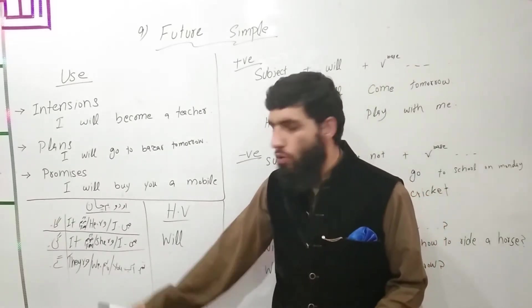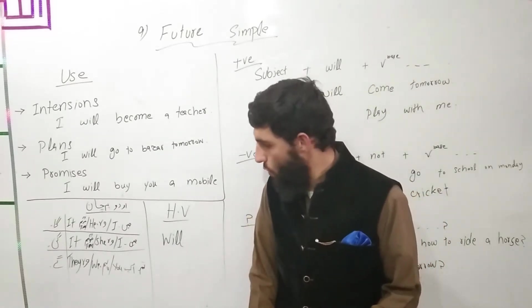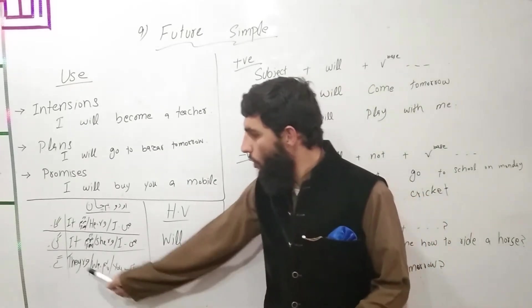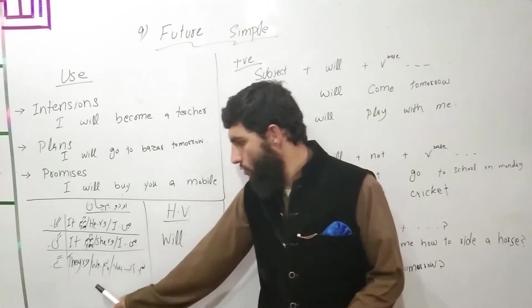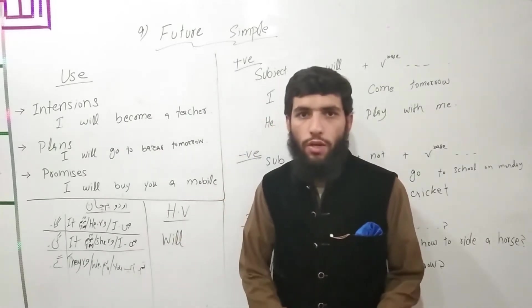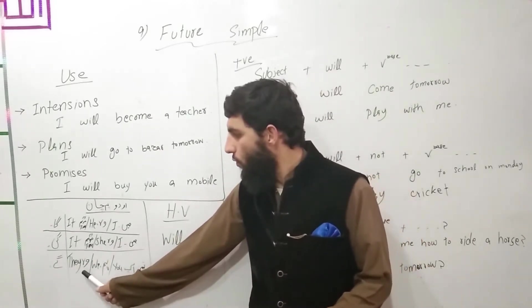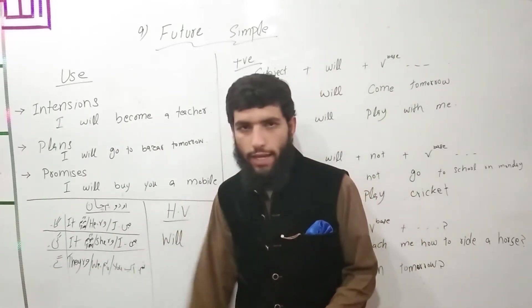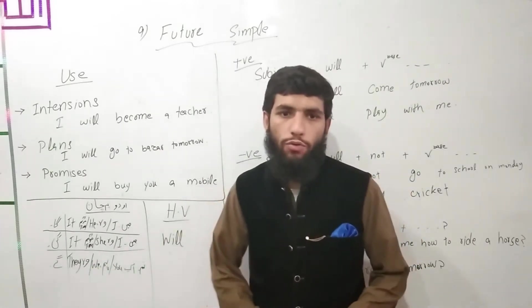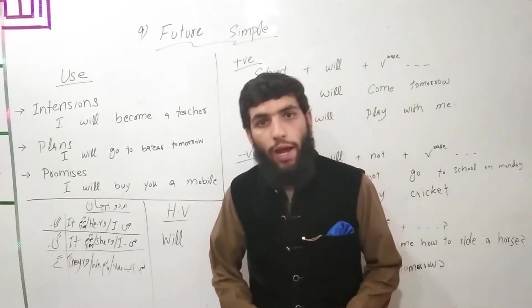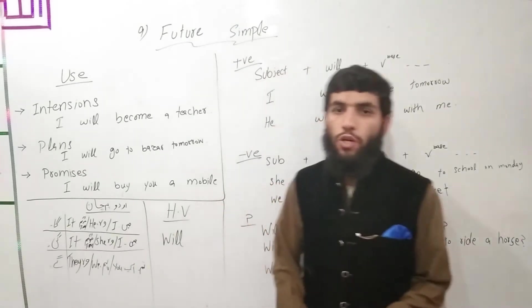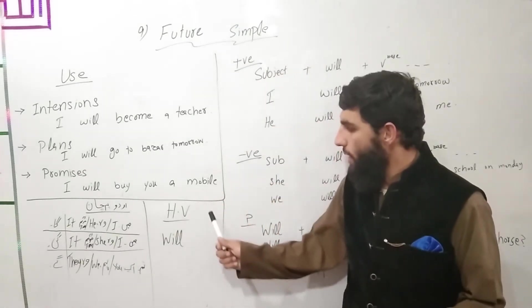For 'you' (tum/aap), we use 'ge'. For 'we' (ham), we use 'ge'. And for 'they' (wo), we also use 'ge'. These are the helping verbs used with future simple tense.